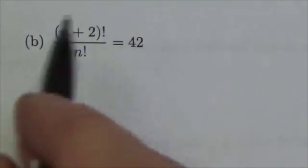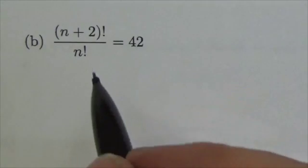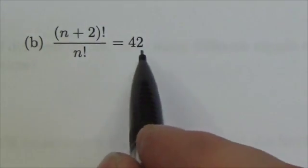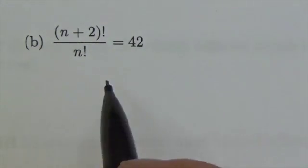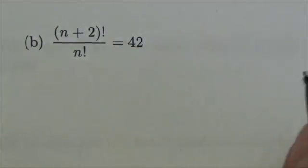All right, hi everybody. In this question we're asked to solve this equation for n. Now I'm seeing some factorials here and I'm seeing the number 42. The number 42 showed up in the previous question so I suspect there's going to be a link here in terms of the values.